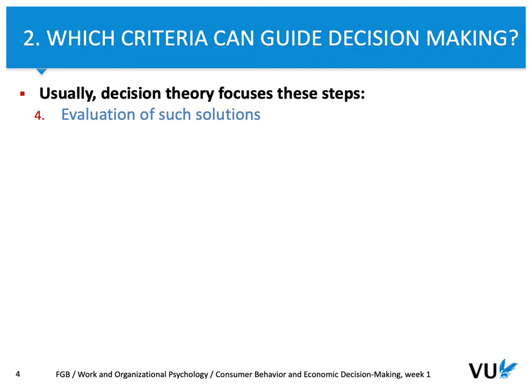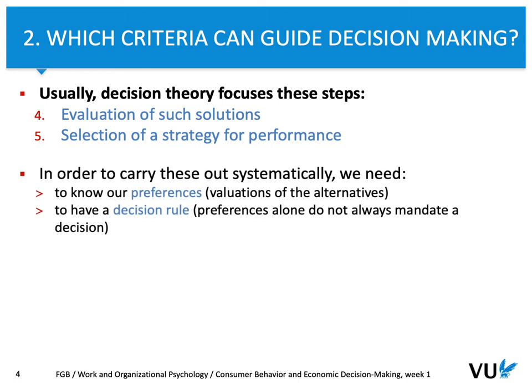Typically, a formal decision-making theory focuses on four elements: evaluation of different solutions and selection of strategies related to choosing different options — a strategy for performance. In order to implement evaluation of solutions or select a specific strategy, we need to know our preferences — how we value alternatives — and also we need to have some, even very simple, simplistic decision rules.